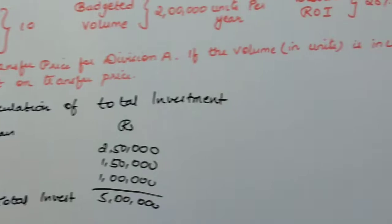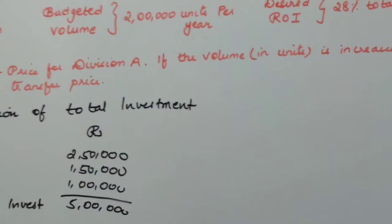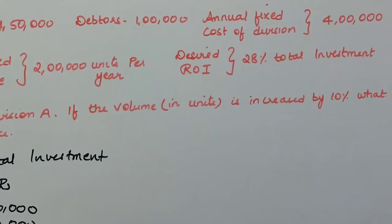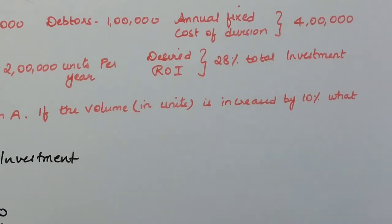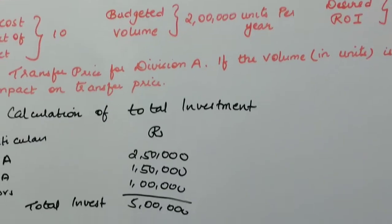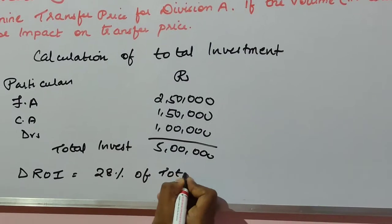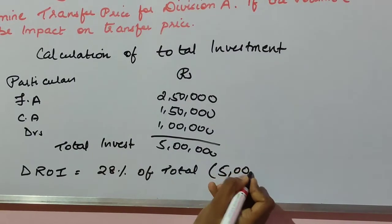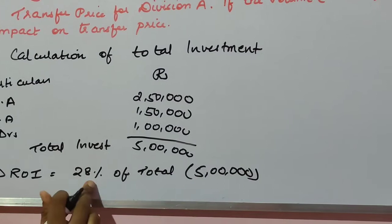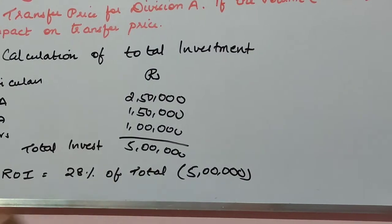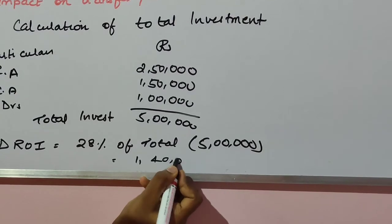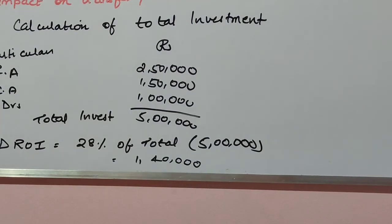Now we find the desired return on investment, which is 28% of total investment of ₹5,00,000. So 28% of ₹5,00,000 gives us ₹1,40,000. That is our desired rate of return.